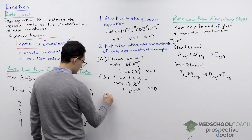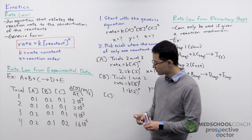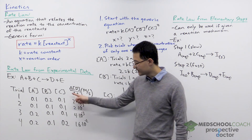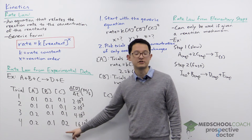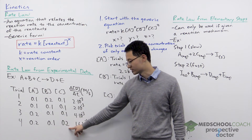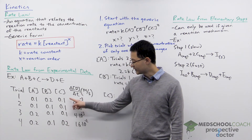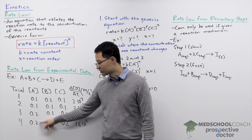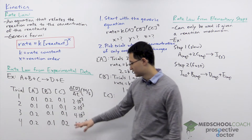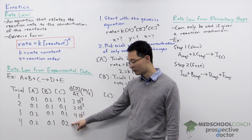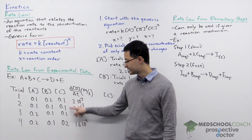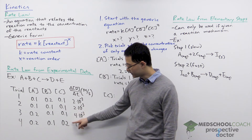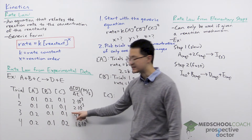Finally, let's look at C. We need two trials where C changes but nothing else does. Trial four is the only one where C changes. Trials one and four won't work because A and B are also changing. Trials two and four won't work because A is also changing. Trials three and four work: A doesn't change, B doesn't change, but C does.